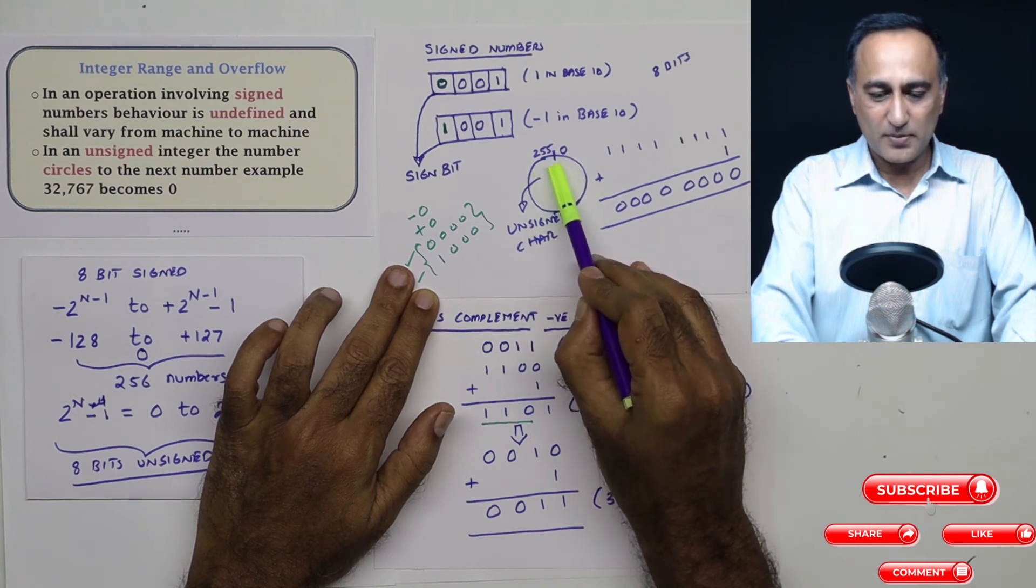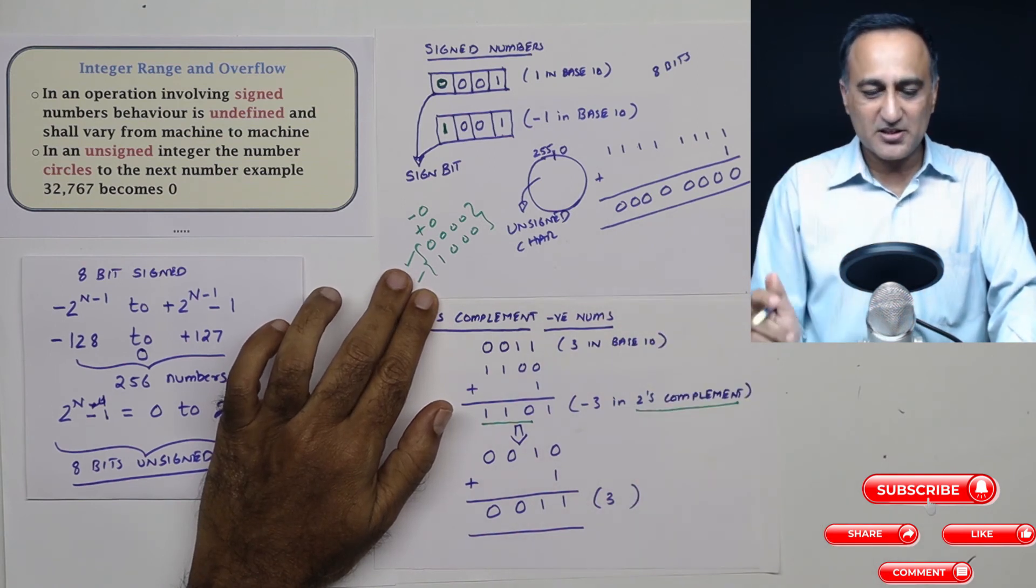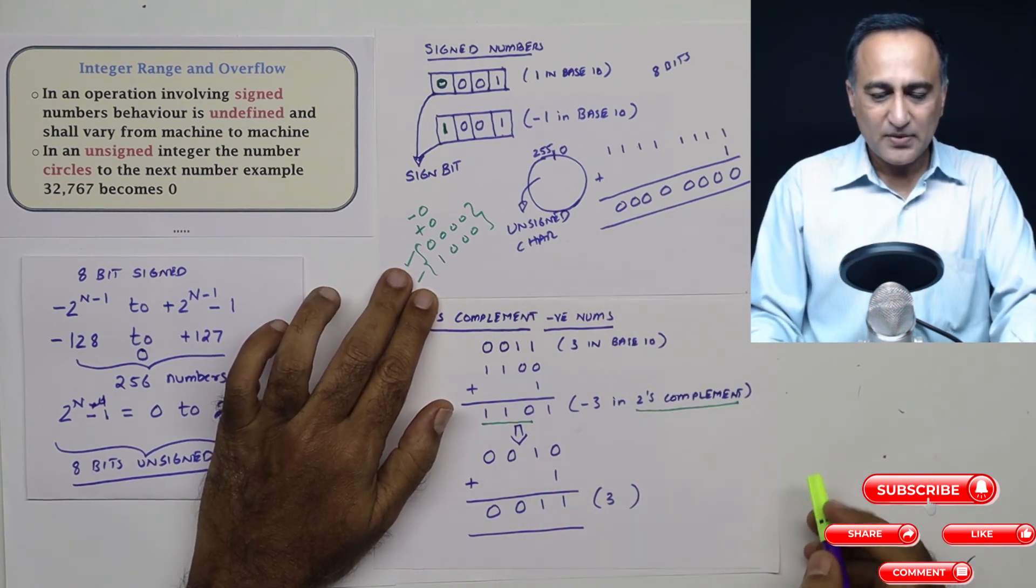If I make 254 plus two, it's going to equal zero, assuming it's an eight bit integer. Just a theoretical concept.